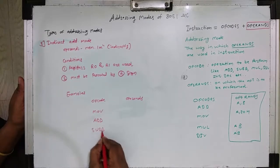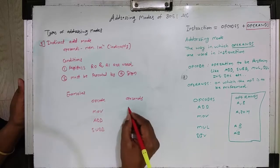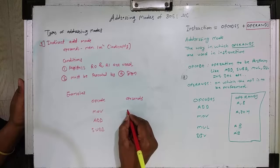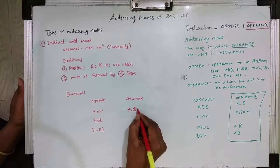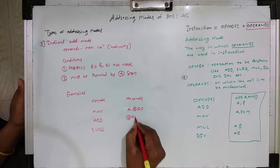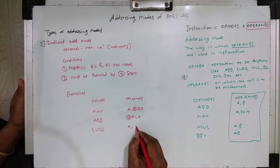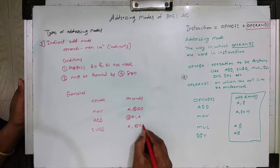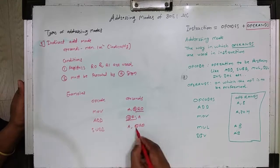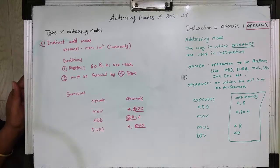Some examples of indirect addressing mode: MOV A,@R0; ADD @R1,A; SUB A,@R0. In these instructions, @R0 and @R1 are used as memory pointers — the @ sign precedes R0 and R1 indicating indirect addressing.